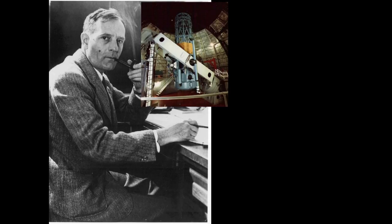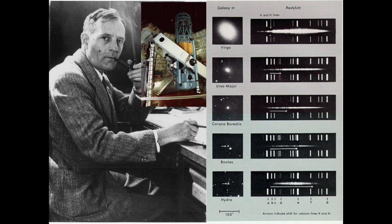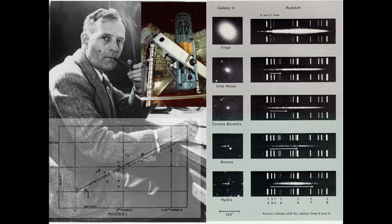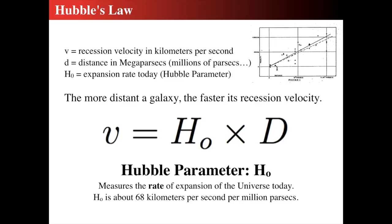Here's Hubble at his desk with the 100-inch telescope in the inset, and here's some of his data showing how he measured the redshift of a particular galaxy — the data from his first paper that changed the world.